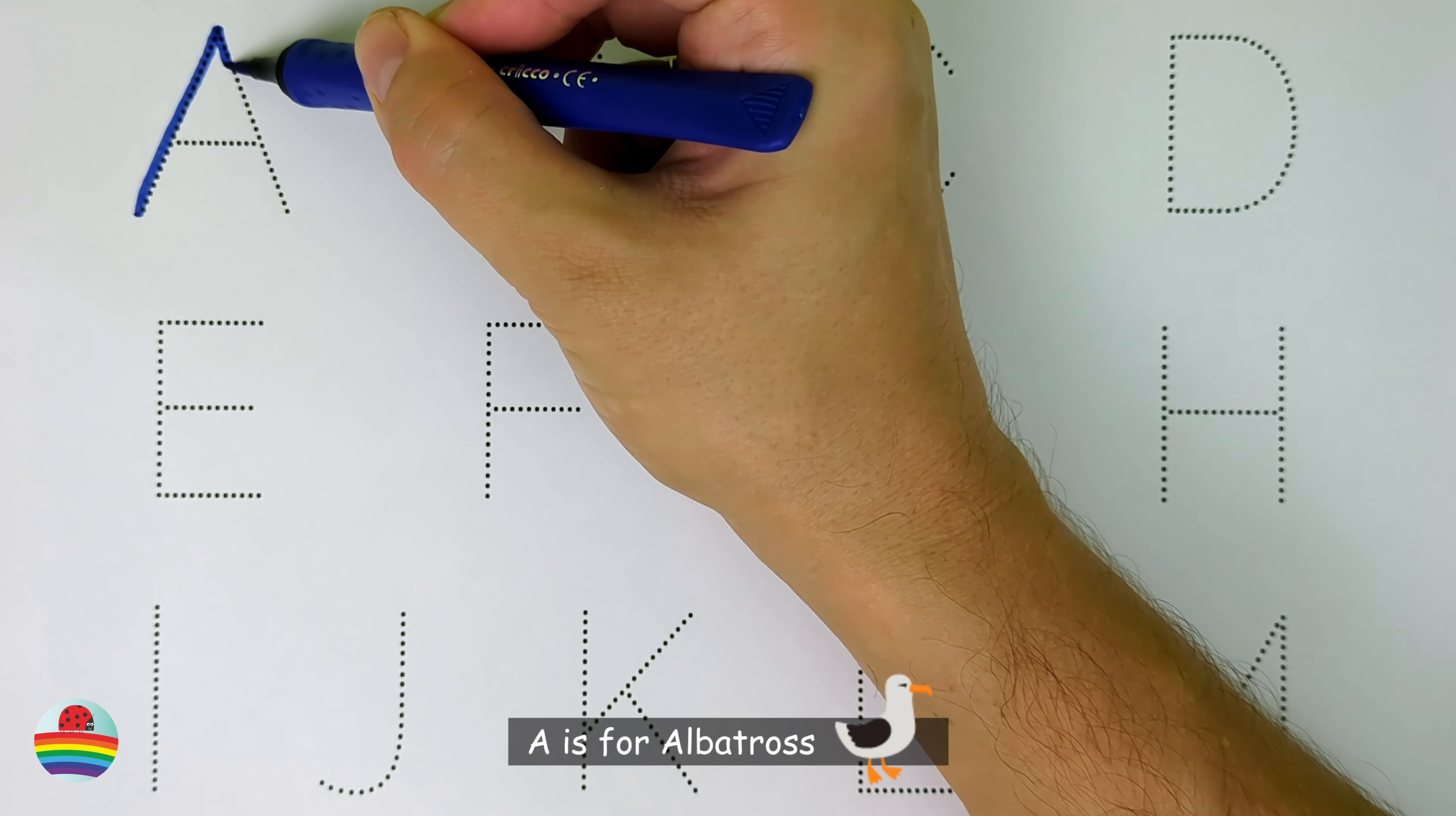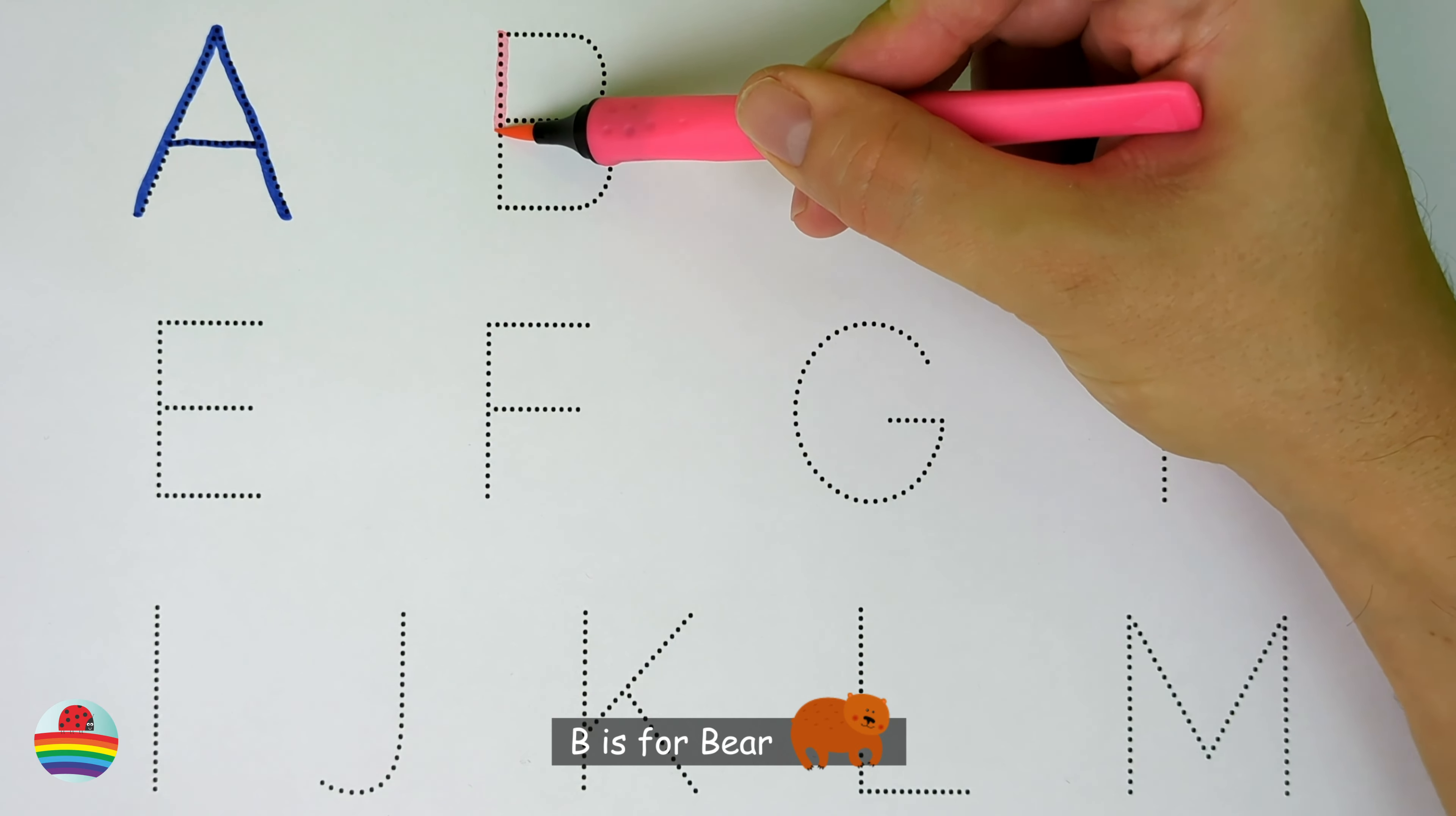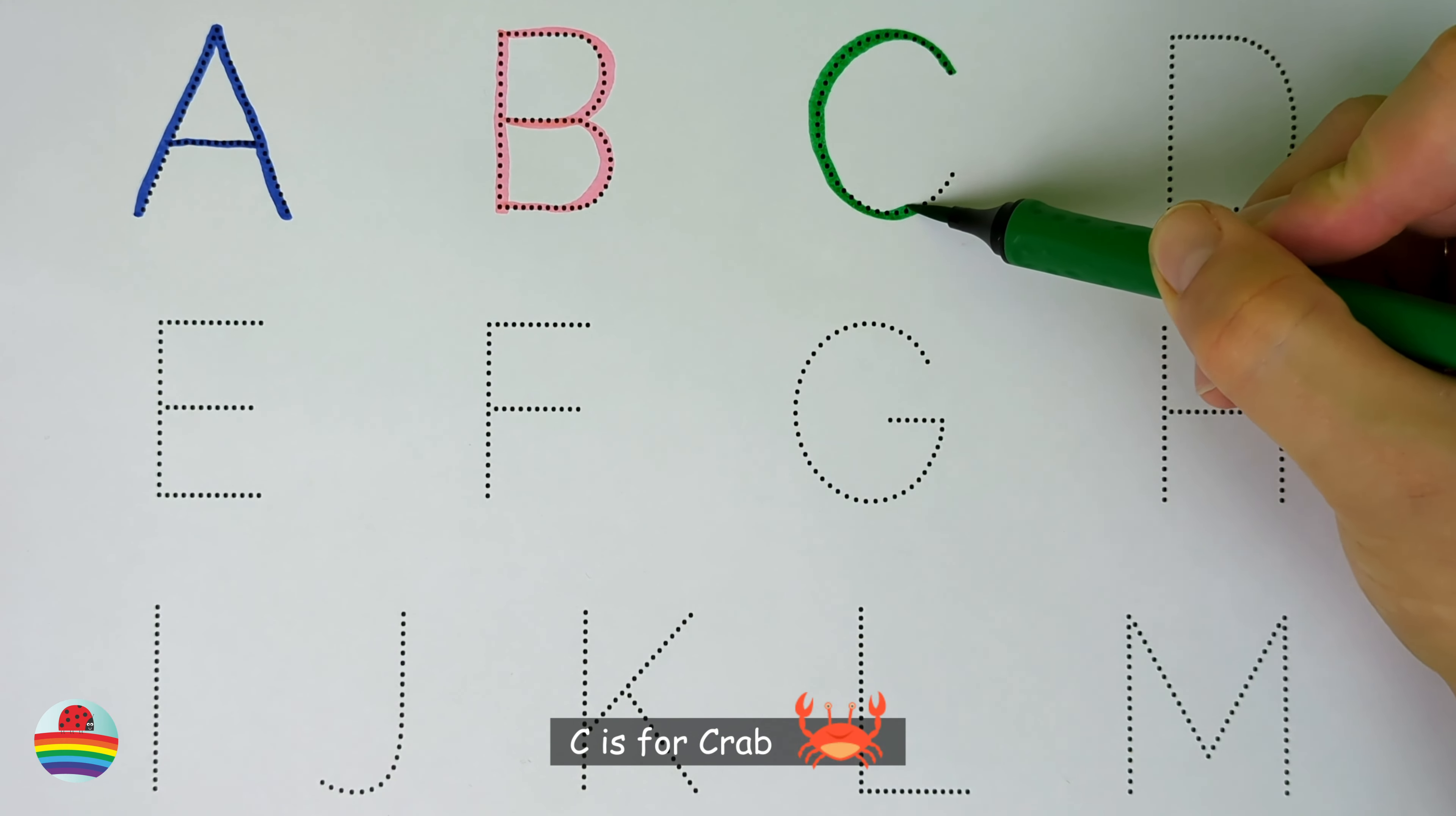A. A is for albatross. A. B. B is for bear. B. C. C is for crab. C.